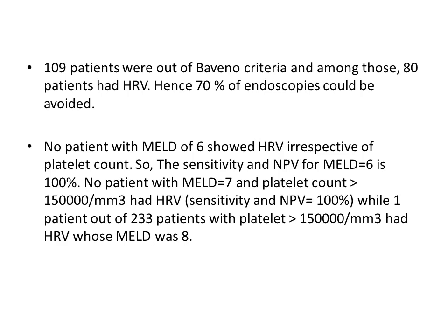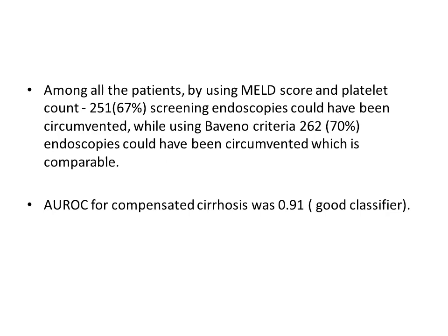No patient with a MELD score of 6 showed high-risk varices irrespective of platelet count, giving sensitivity and negative predictive value for MELD ≤6 of nearly 100%. No patient with a MELD score of 7 and platelet count greater than 150,000 had high-risk varices. Only 1 out of 233 patients with platelet count greater than 150,000 had high-risk varices, whose MELD was 8. Using MELD ≤6 or MELD <8 with platelet count greater than 150,000, approximately 67% of screening endoscopies could have been circumvented, comparable to the 70% achieved using Bavino 6 criteria.